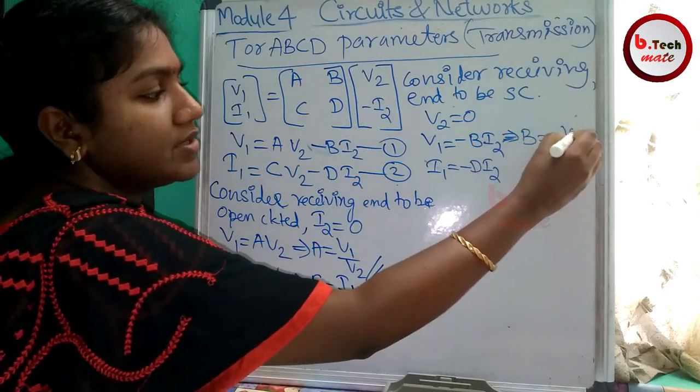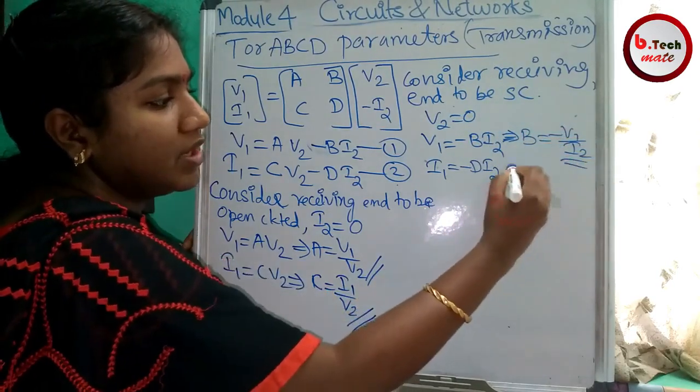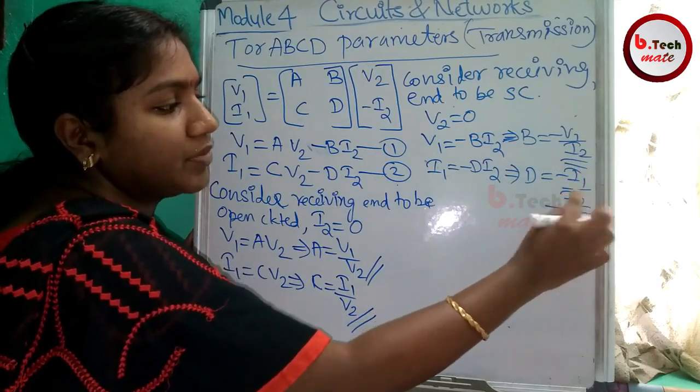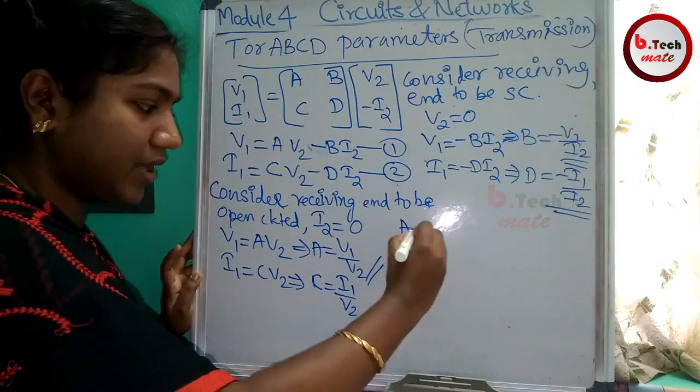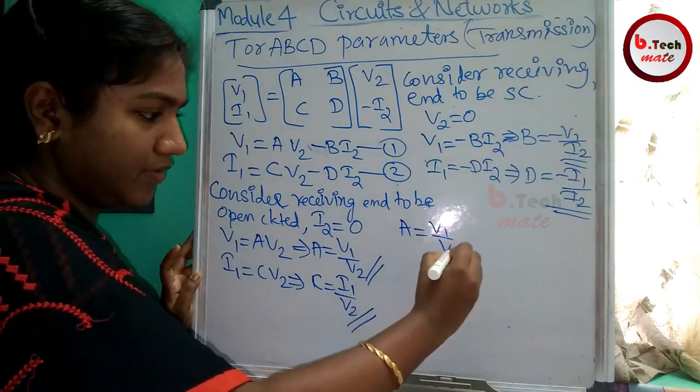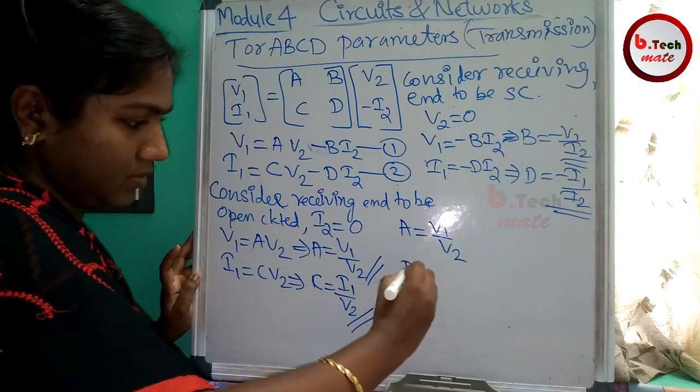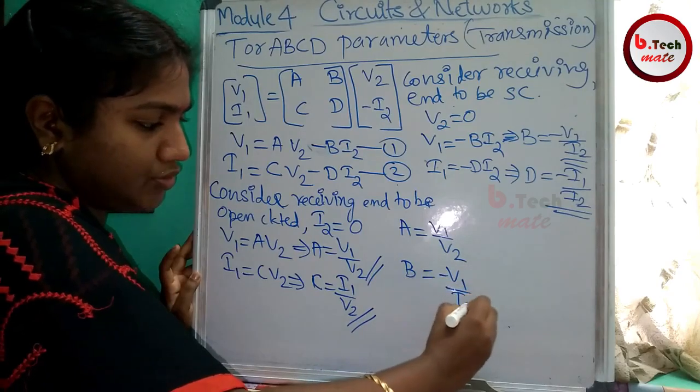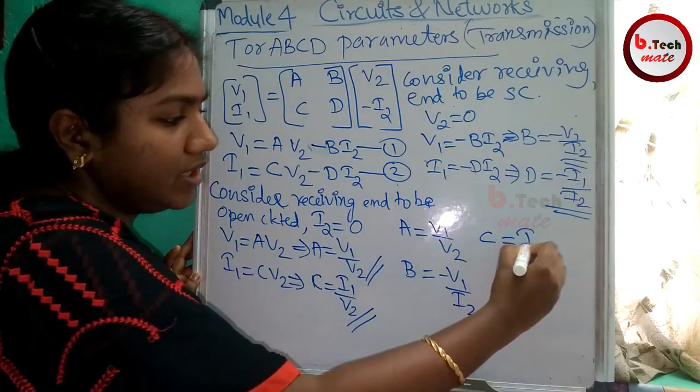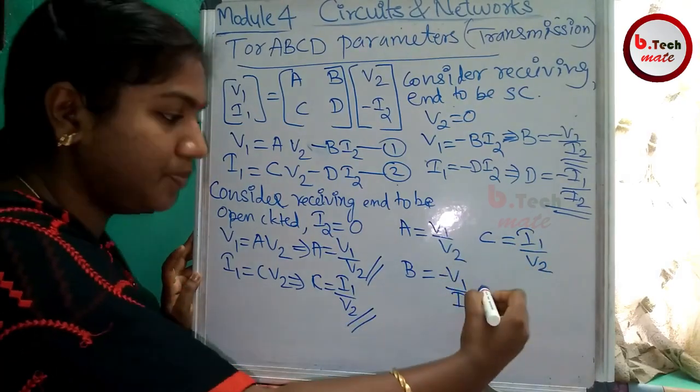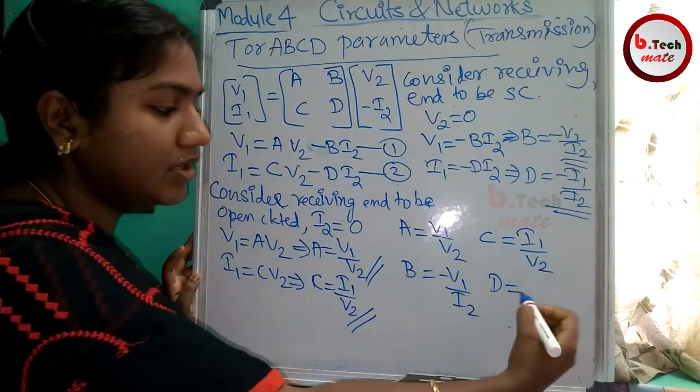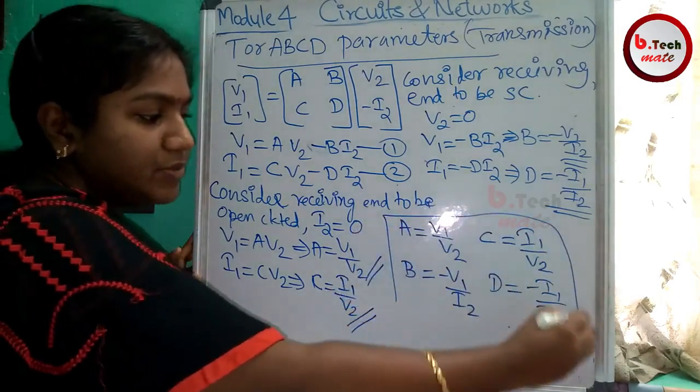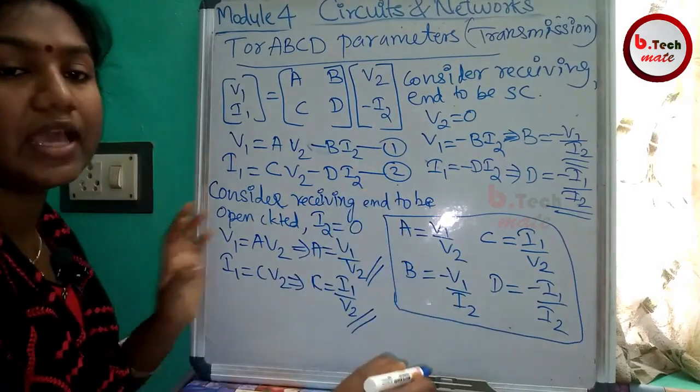V2 is 0. Now let's take the four parameters. A equals V1 by V2. Now let's take the transmission or T parameters: A, B, C, D parameters.